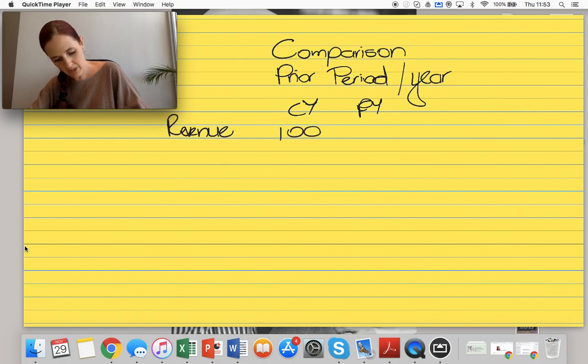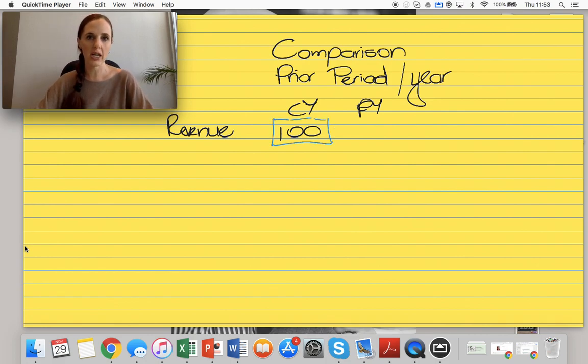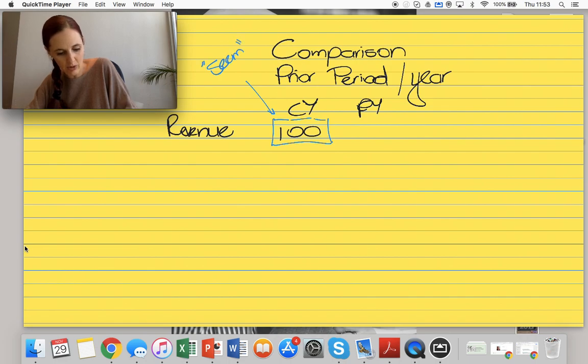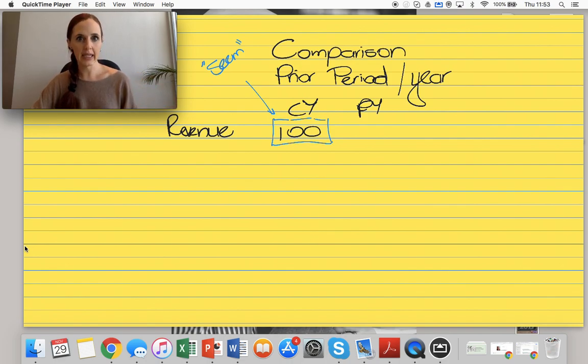So you're auditing revenue for this year. Let's keep in mind that this is the information that you're trying to develop some kind of assessment of. You're asking yourself, does this information seem right? That's your responsibility. I'm trying to assess that information, and in order to assess that information, I'm going to use prior year or prior period information to see how I feel about this.